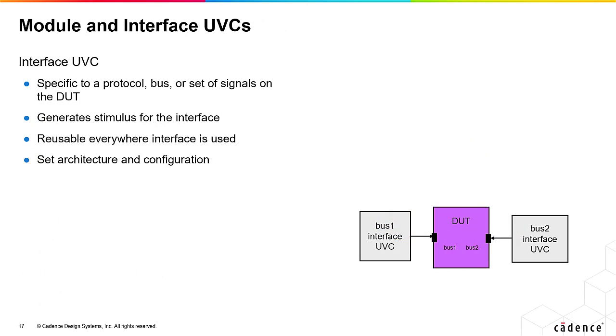Let's stress the difference between interface and module UVCs. Interface UVCs are specific to a protocol, bus or discrete set of DUT ports. They generate stimulus for the bus and are reusable everywhere that protocol is used. Interface UVCs have a set architecture and some consistency in configuration.